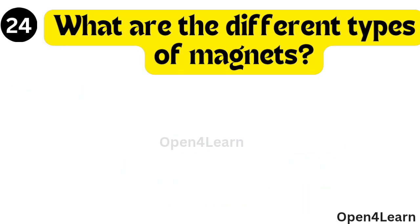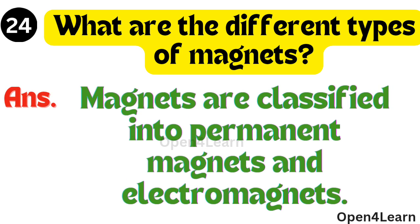Question, what are the different types of magnets? Answer, magnets are classified into permanent magnets and electromagnets.